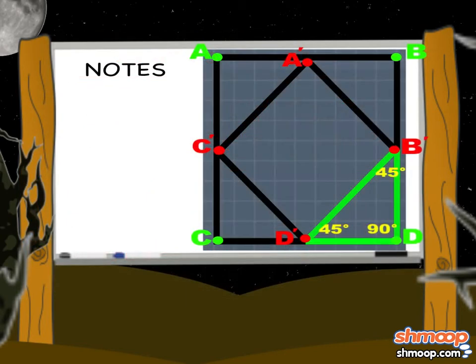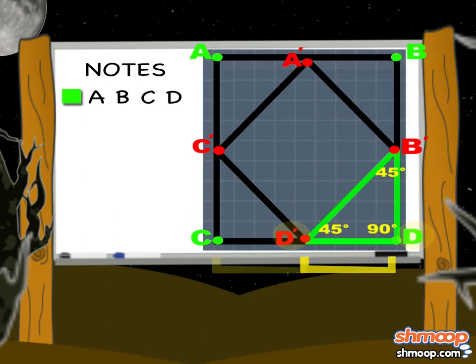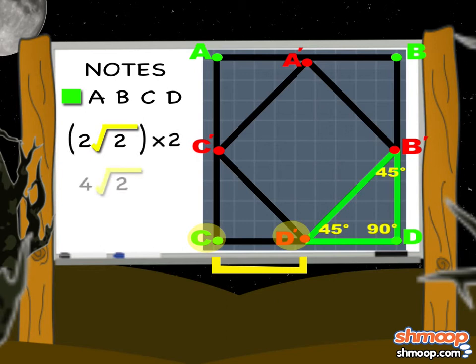We're looking for the side of the big square ABCD. If we look at the picture, we know that D'D' is the same length as D'C. So we just have to multiply 2 root 2 by 2. That gives us 4 times root 2.